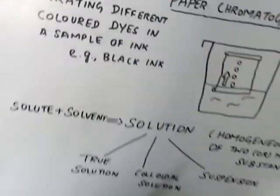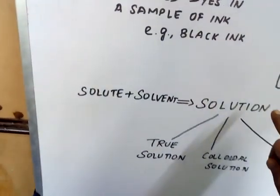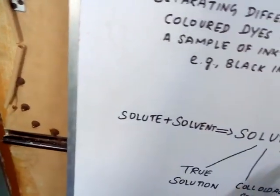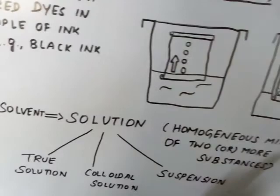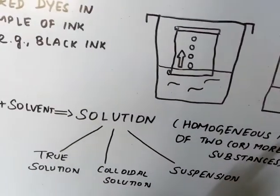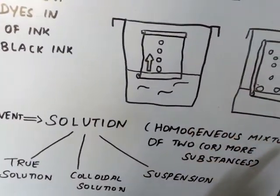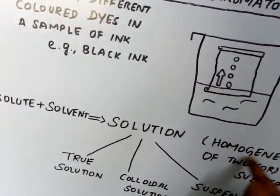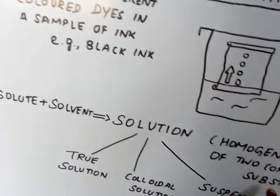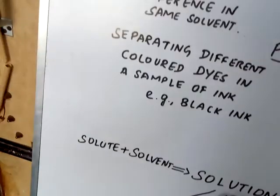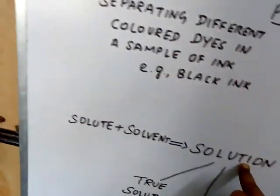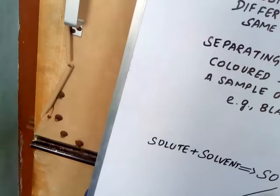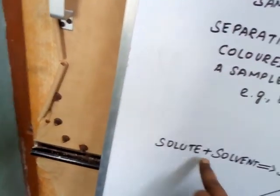After that, we will start solutions. Solutions when we assign, already we saw what is mixture. Homogeneous mixture means what is it? Uniform composition. So homogeneous mixture of two or more substances, we are saying it is solution. We are saying it is solution. Solution means solute and solvent.